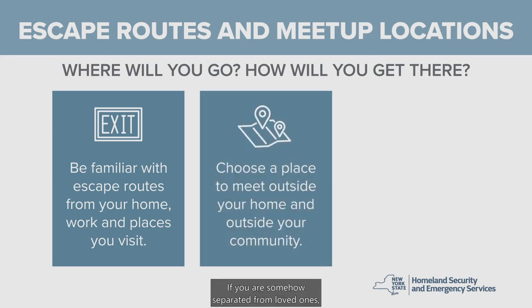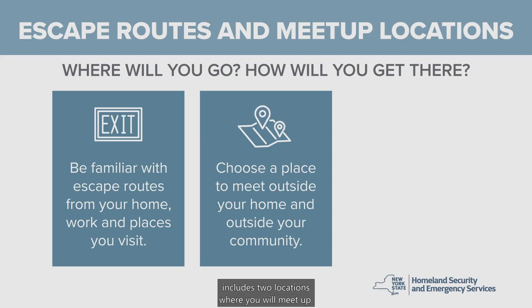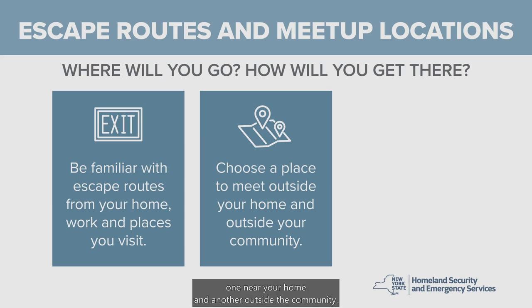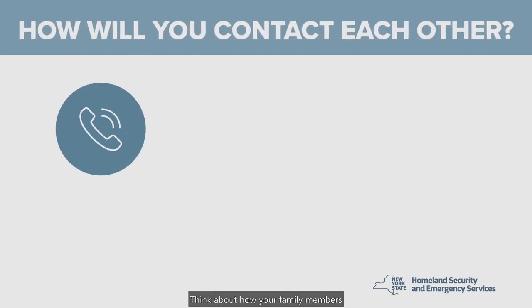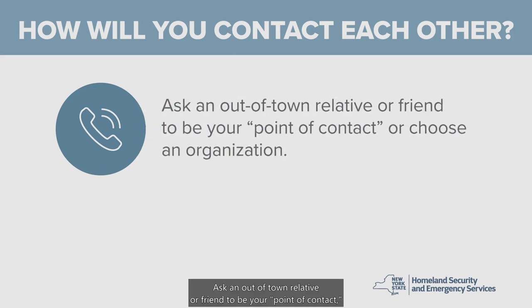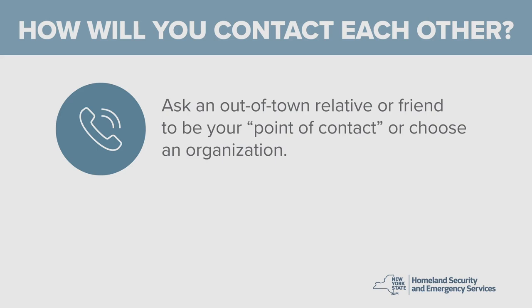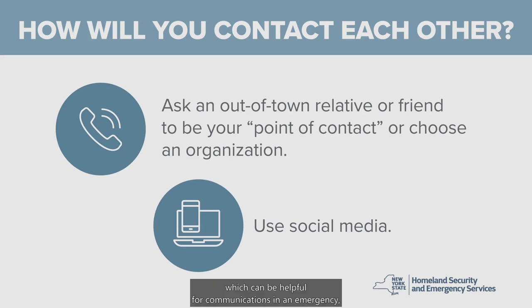If you are somehow separated from loved ones, ensure that your family emergency plan includes two locations where you will meet up. Pick one near your home and another outside the community, and ensure family members are familiar with evacuation routes. Think about how your family members will stay in contact in an emergency. Ask an out-of-town relative or friend to be your point of contact. Don't forget about social media, which can be helpful for communications in an emergency, even if it's just to let others know you are safe.